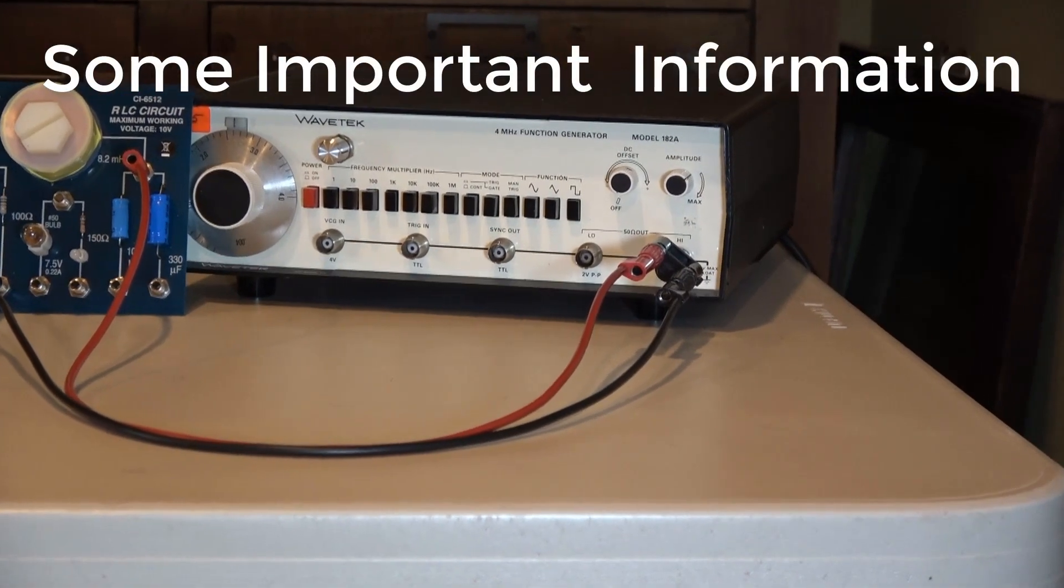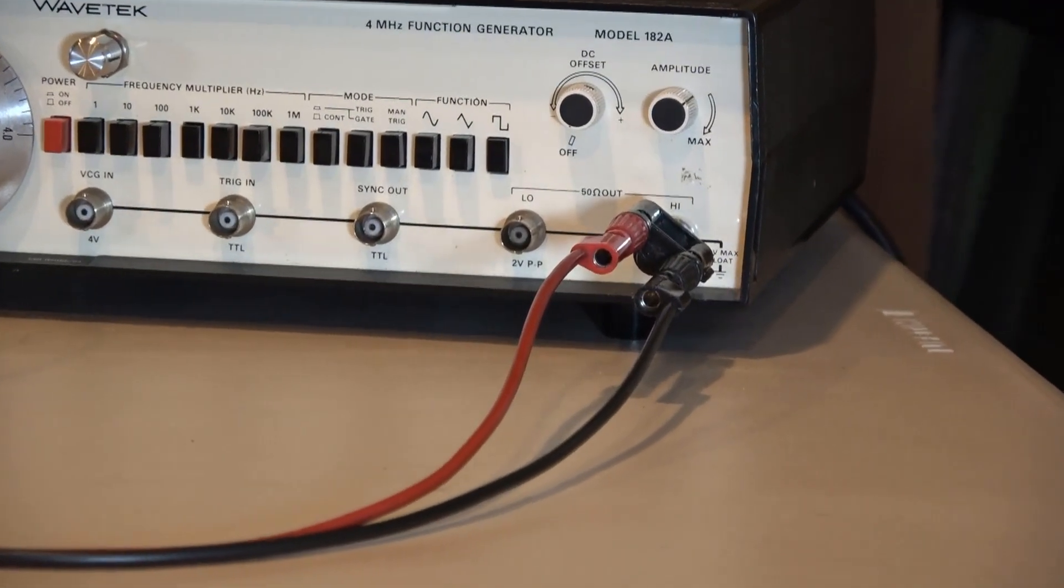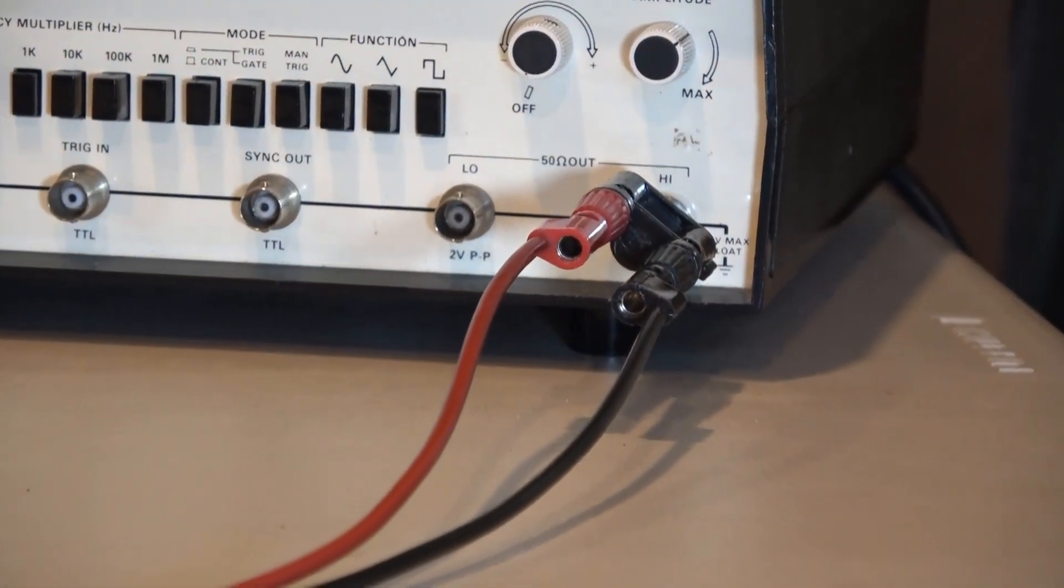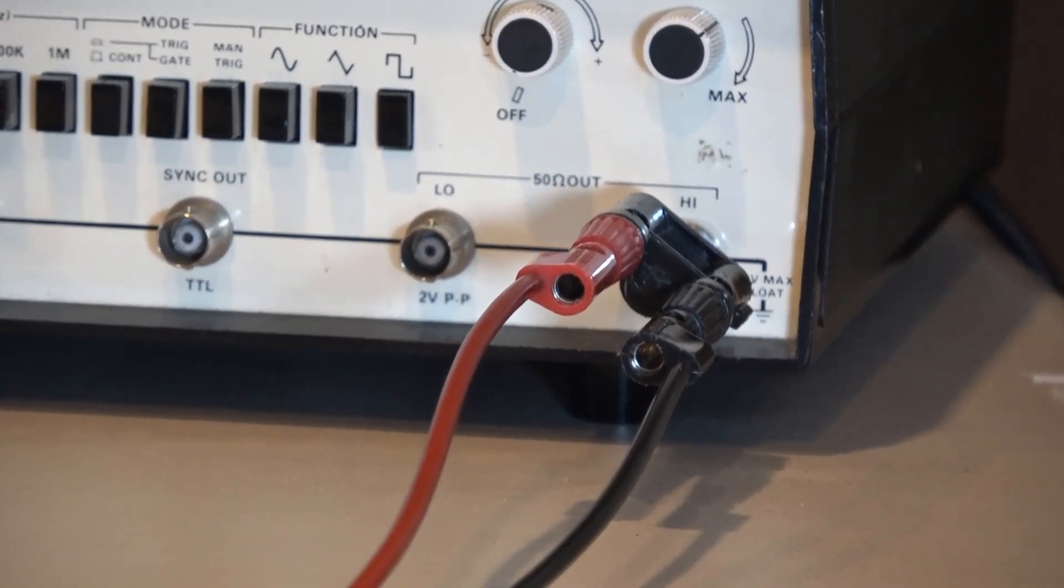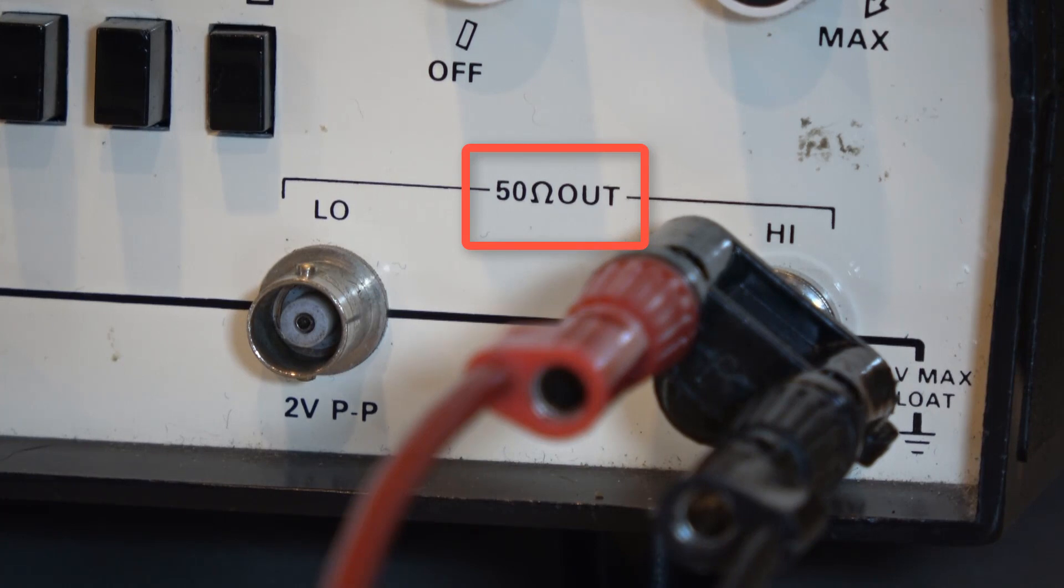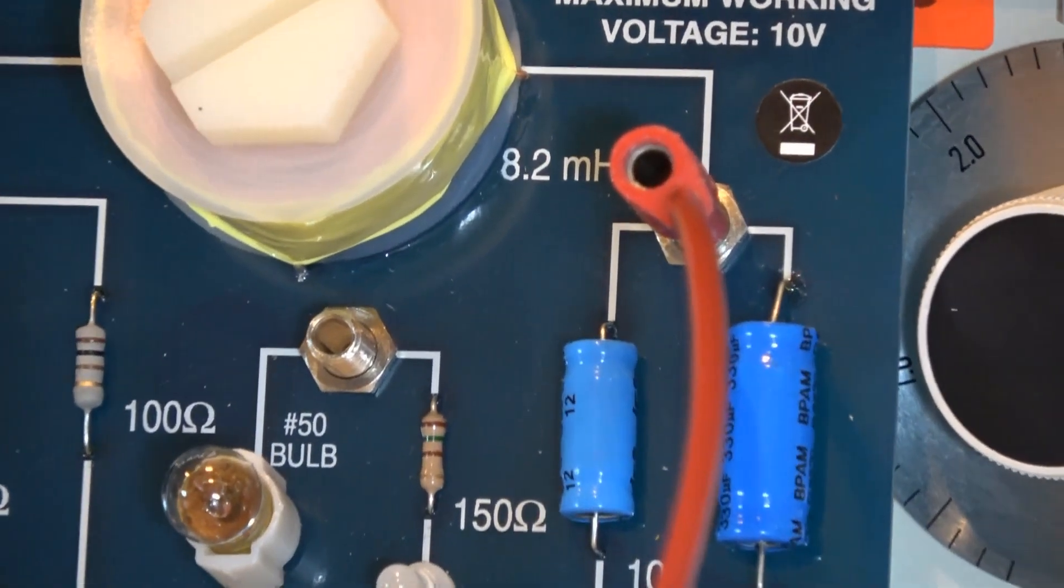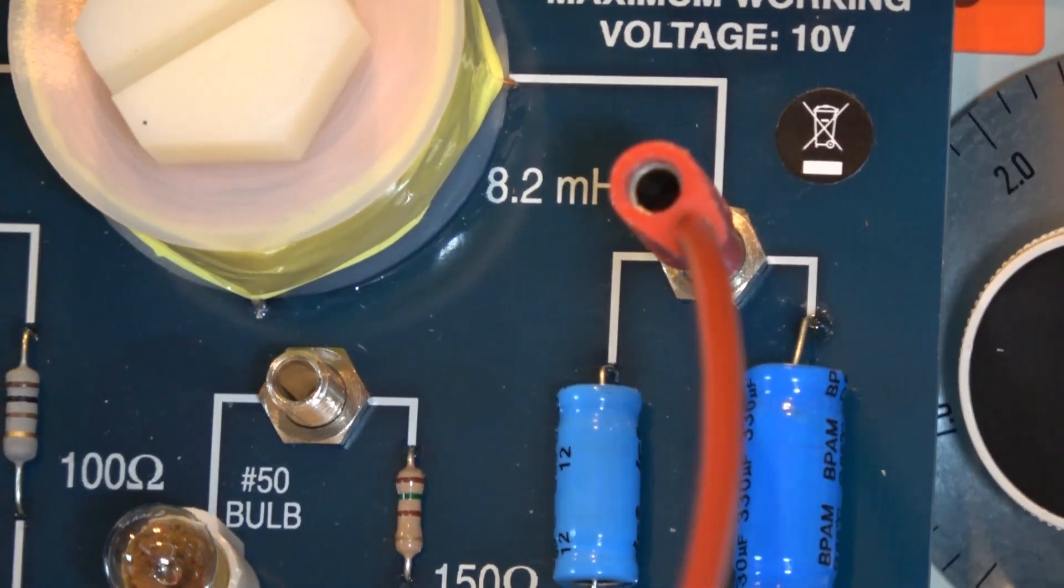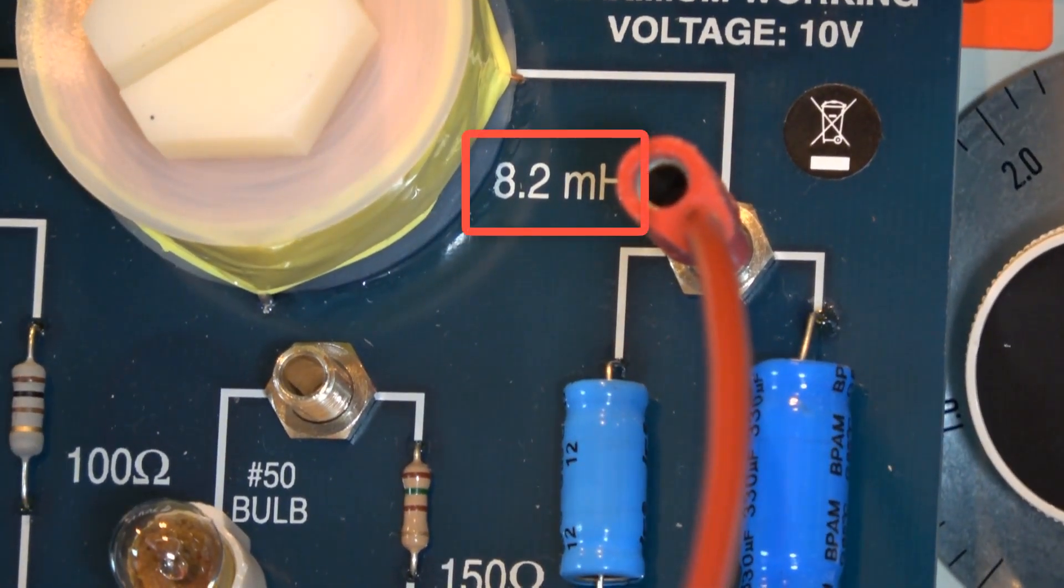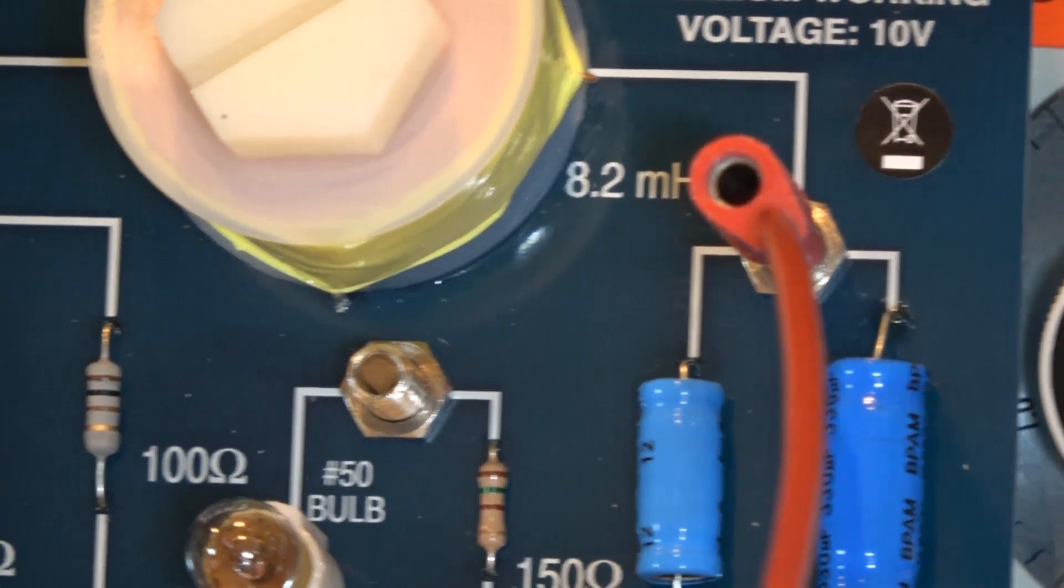In order to do this experiment, you're going to need to record some important information from the equipment. The first thing you'll need is from the function generator. Then we've got a couple of pieces of information that are important to record from the circuit board.